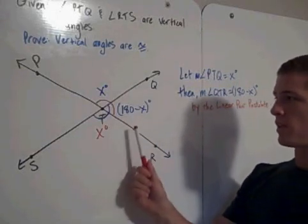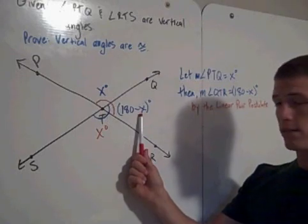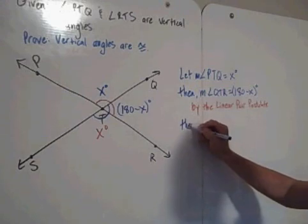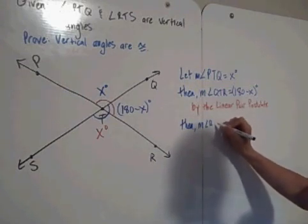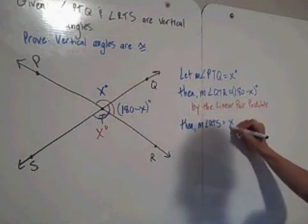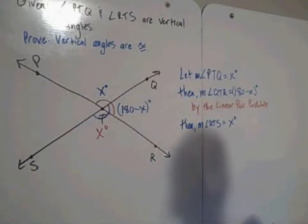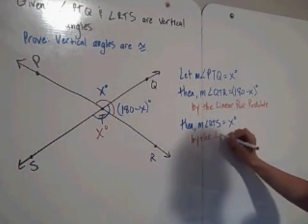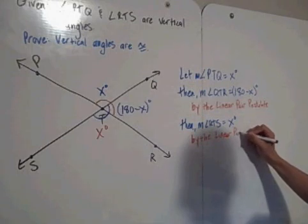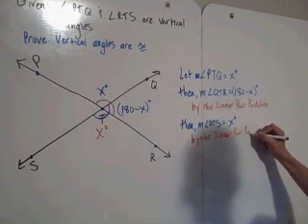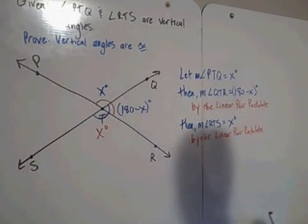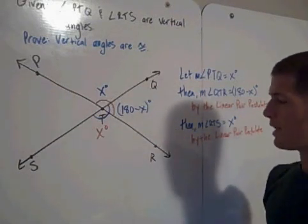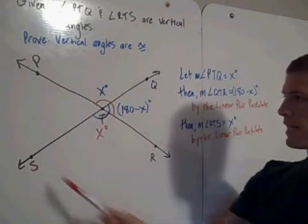Since x degrees plus 180 minus x degrees is equal to 180, the measure of angle RTS must equal x degrees, again by the linear pair postulate. So we have the measure of angle PTQ and the measure of angle RTS are equal.